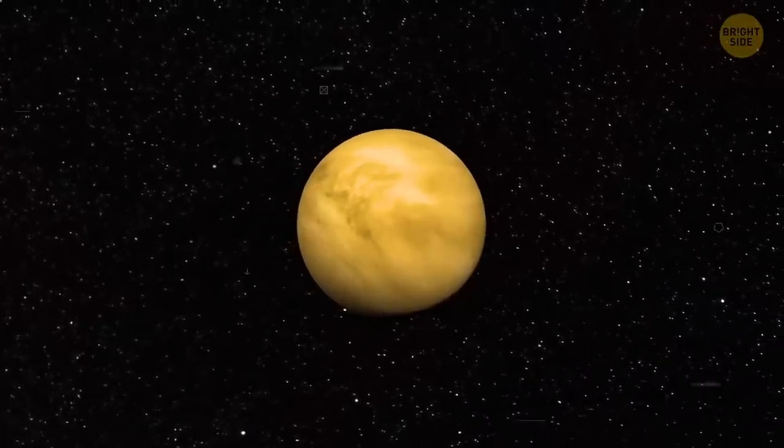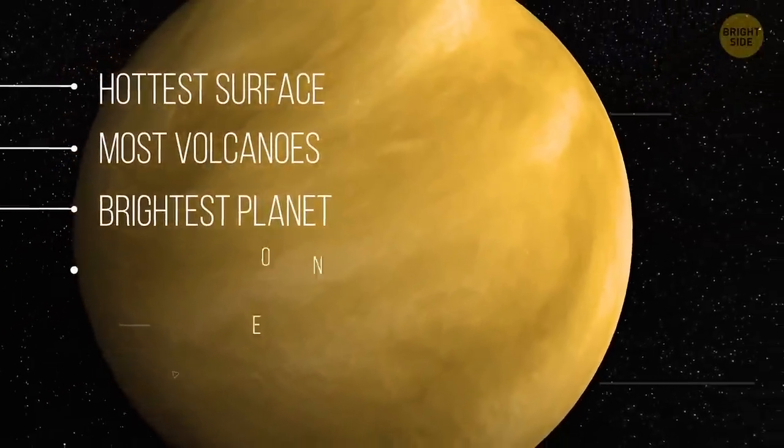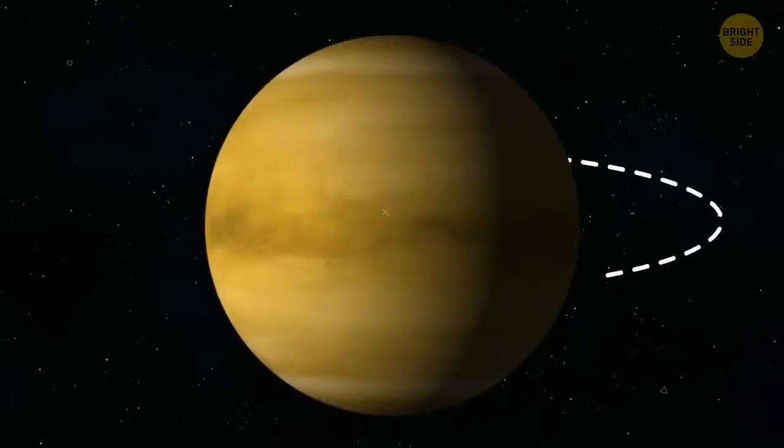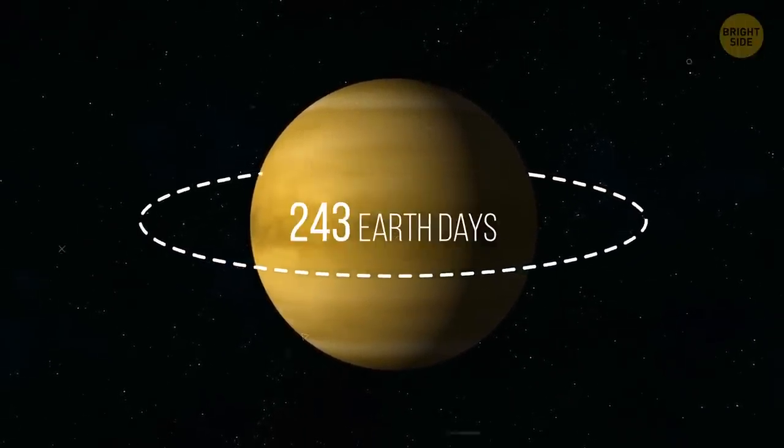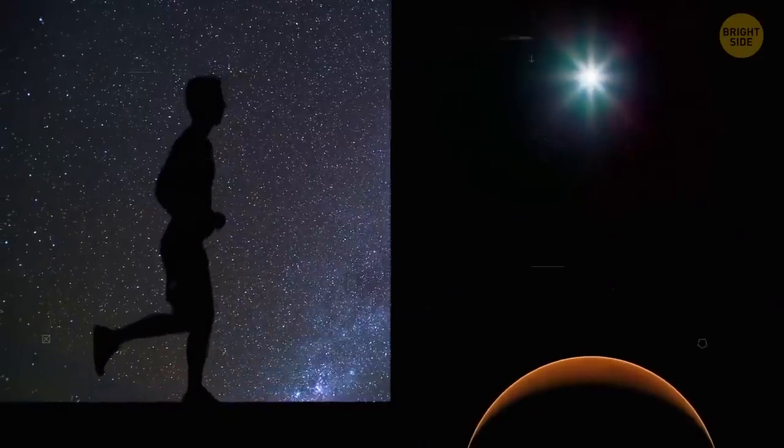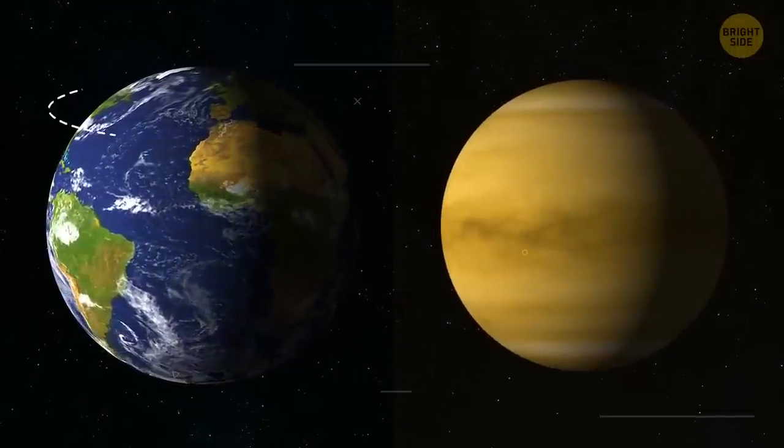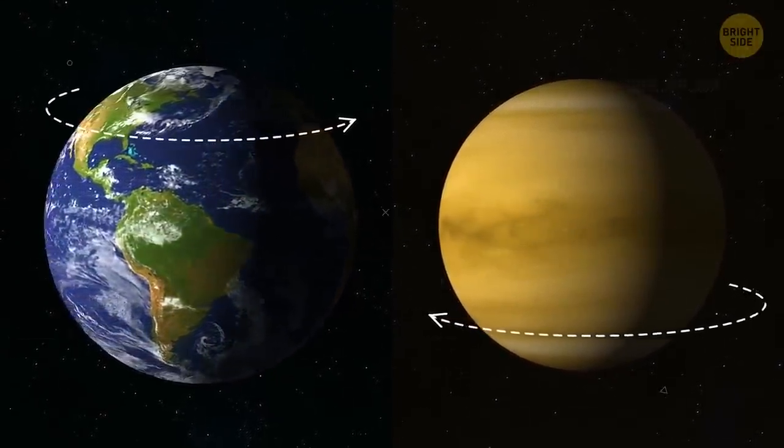Venus is a planet of extremes - the hottest surface, the most volcanoes, the brightest planet, and the closest one to Earth. It's also the slowest spinning, it barely rotates. Making a day on Venus lasts 243 Earth days. You could literally walk faster before the planet makes a complete turn. Venus also rotates in the opposite direction that Earth does. So, sunrises are in the west, and the Sun sets in the east.